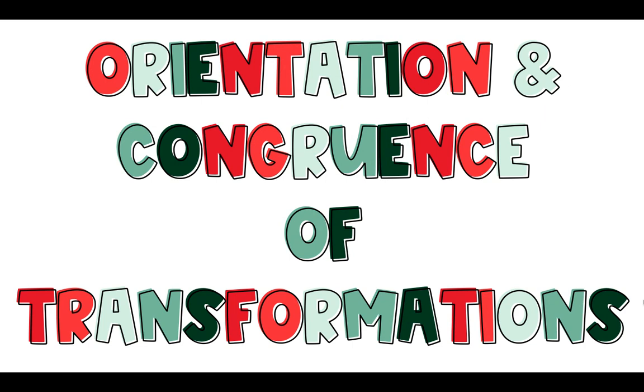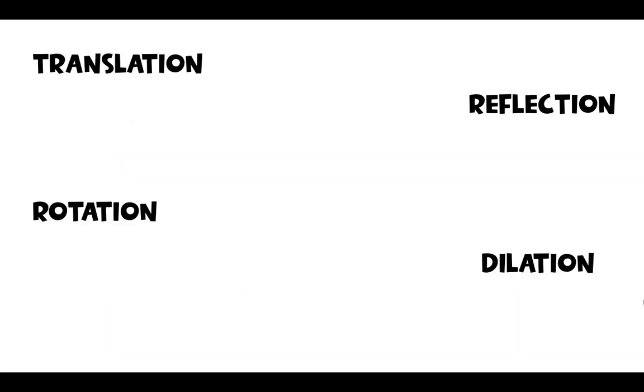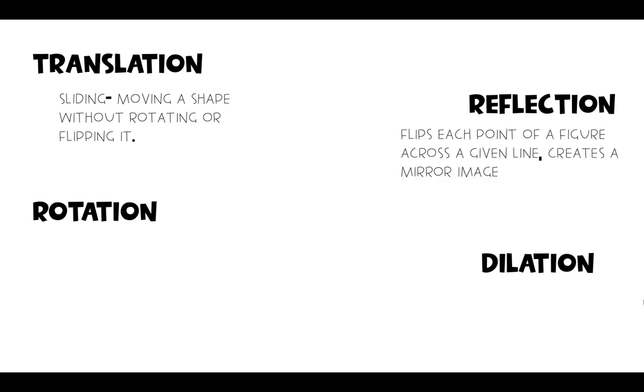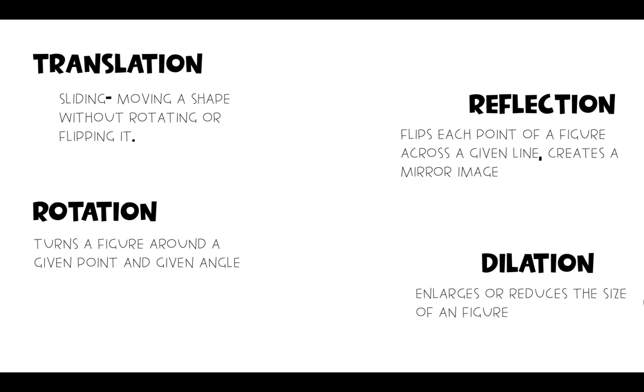Before we get into orientation and congruence, I do want to remind us of our four transformations. We have translation, which is when we slide our shape, so we move a shape without rotating or flipping it. We have reflection, we flip each point of a figure across a given line. It creates a mirror image. We have rotations, we turn a figure around a given point and a given degree. And then we have dilations, so that enlarges or reduces the size of a figure.